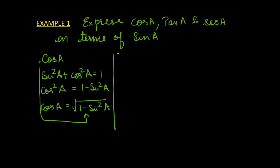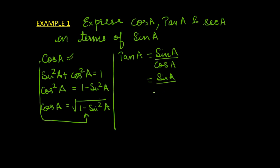Now let us try to express tan A in terms of sine A. Tangent of A is sine A divided by cosine A. We have just expressed cosine A as the square root of 1 − sin²A, so we can write tangent A as sin A over the square root of 1 − sin²A. This is tangent A.